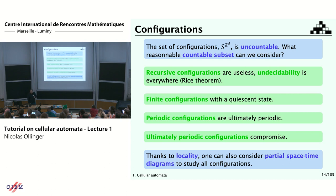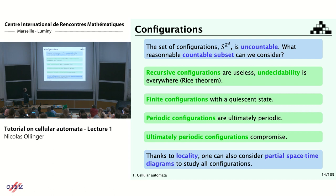I need to decide what are the interesting configurations to consider. Because when you look at the whole space of configurations, there are a bit too many of them. As a computer scientist, I prefer to have countable objects. If you went to Sylvain's lecture, maybe you would like to take every configuration that can be computed — every recursive configuration — until you learn about Rice's theorem, which states that everything is undecidable about that kind of object. So that's not a good idea.